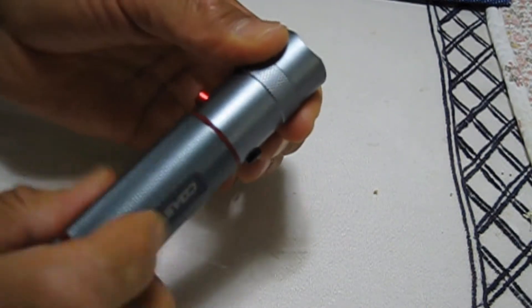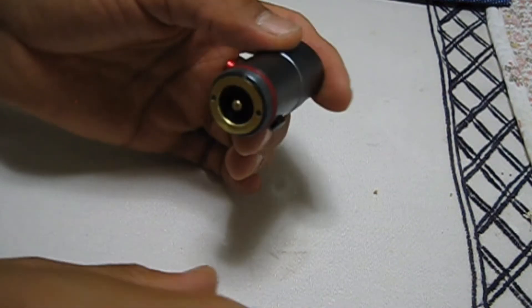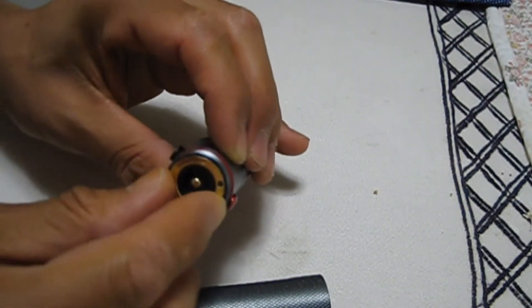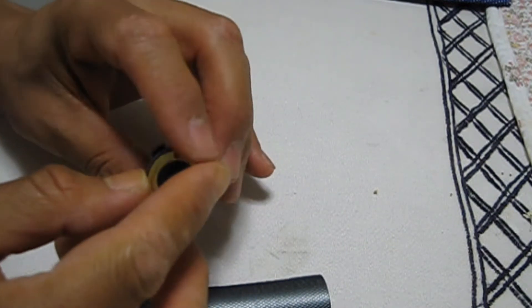First you take off the battery, and then you take off this retainer by spinning it to the left. As you can see, I already loosened it.